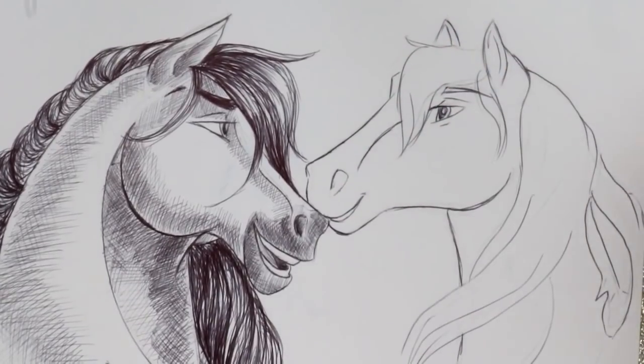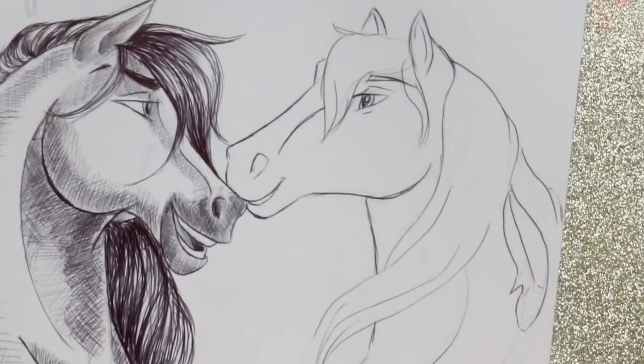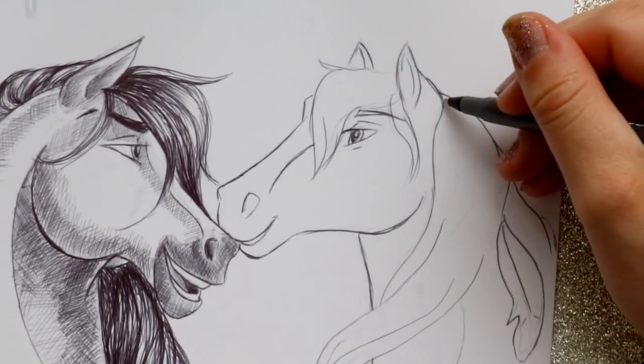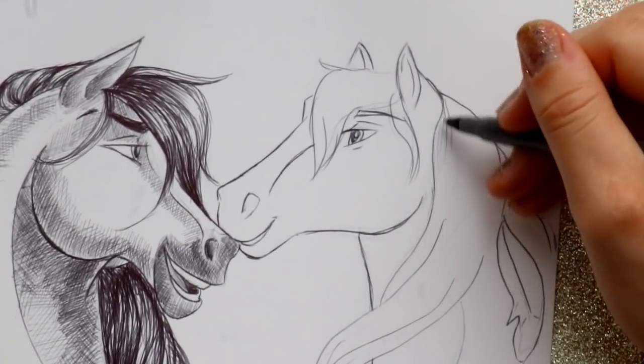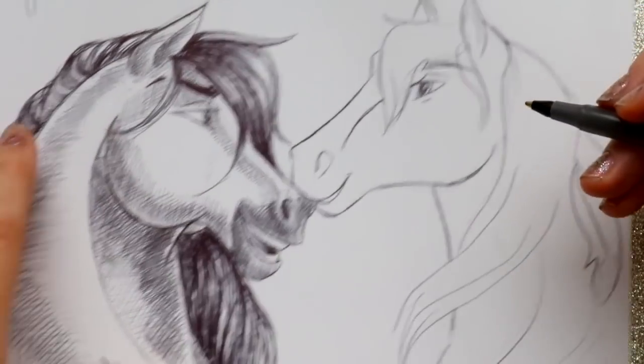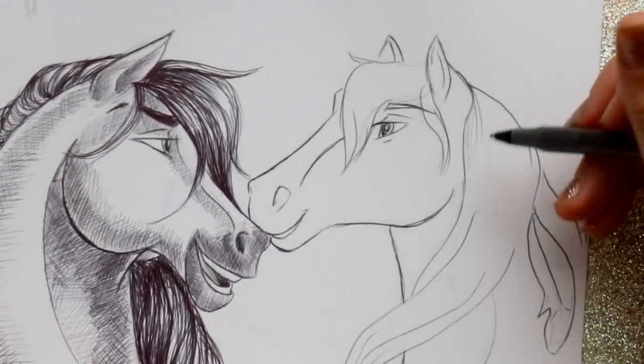So we know that Rain is a completely different horse. I'm going to let you watch how I would color Rain in. Now she has a lot of differences. Like she has a lot lighter hair. I was just trying to make this as dark as possible because we all know Spirit has super dark brown hair.